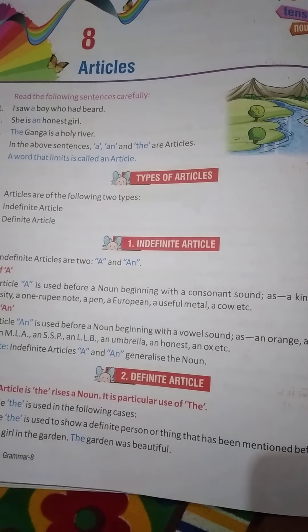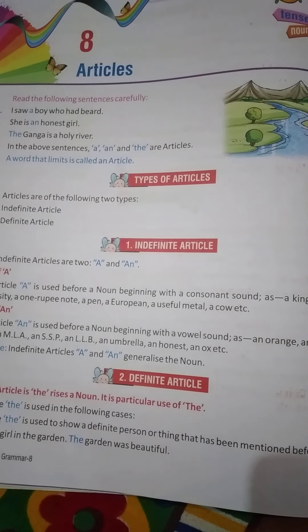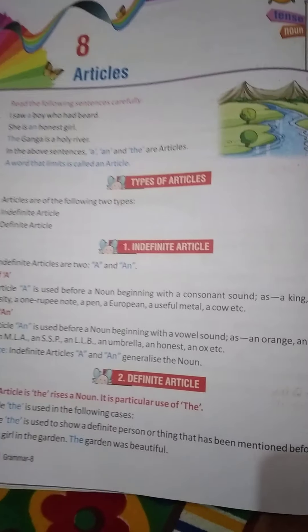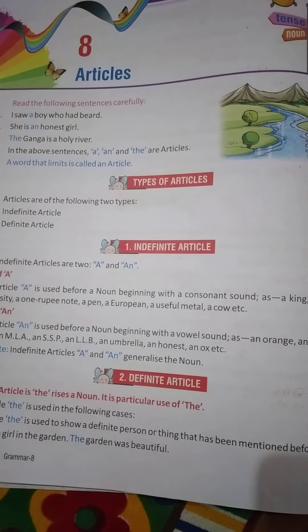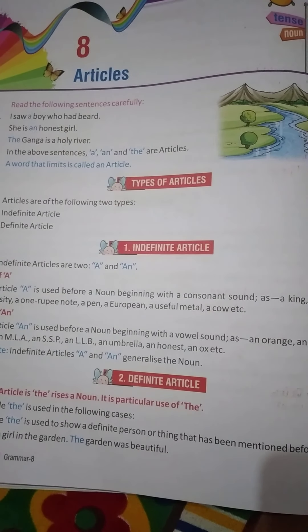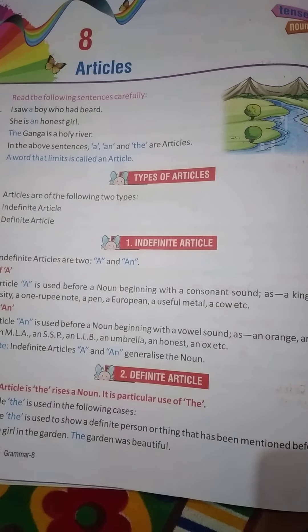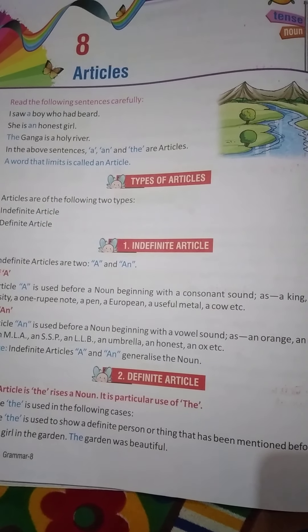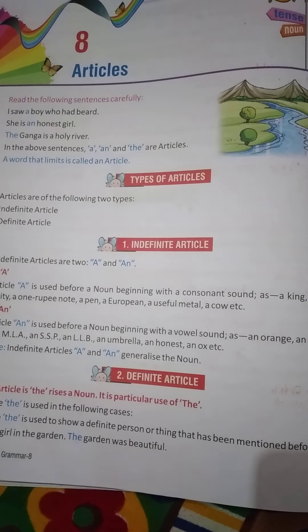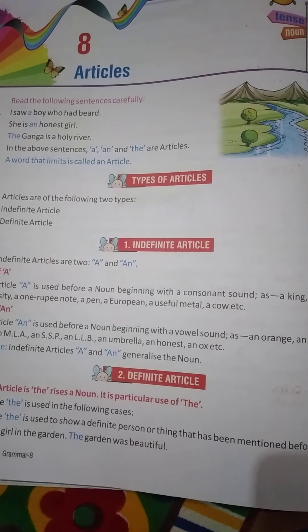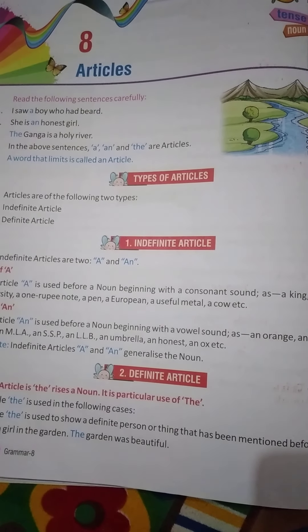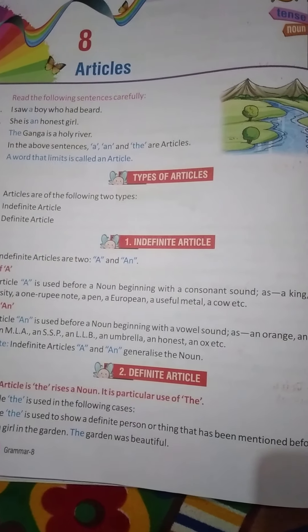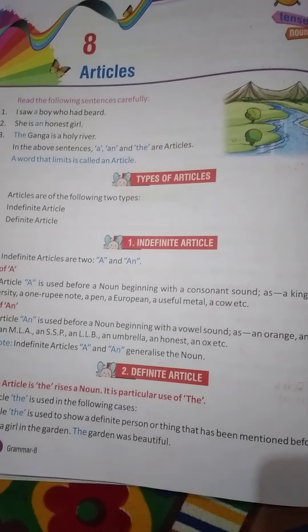An article is a word — it is an adjective. Like an adjective, an article also modifies nouns. So in short, we can say that articles modify the noun. For example: 'I saw a boy who had a beard,' 'She is an honest girl,' 'The Ganga is a holy river.' In these three sentences, a, an, and the are articles that modify the noun.